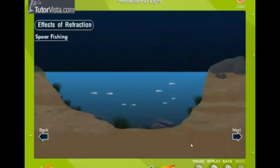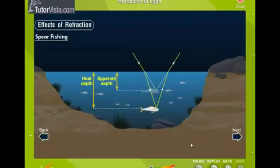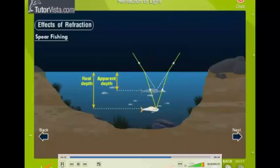During spear fishing, the fisherman aims at the tail of the fish. When a fish in clear water is viewed from an angle, its image appears ahead of its actual position as it is raised up due to refraction of light from water to air.